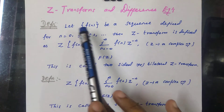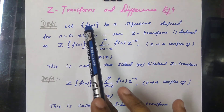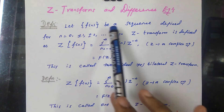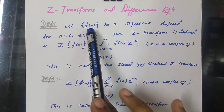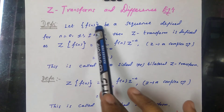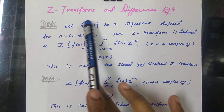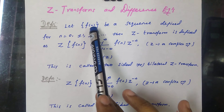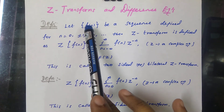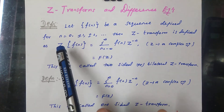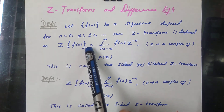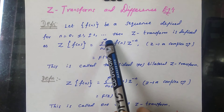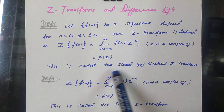Under the definition of Z transform, a Z transform operates on a sequence, denoted by chain brackets. So Z of f of n equals the summation where the limit is minus infinity to plus infinity — that is why it is called two-sided.